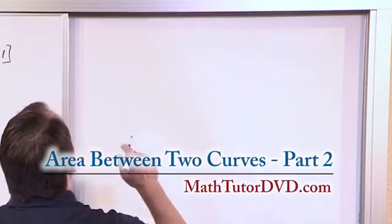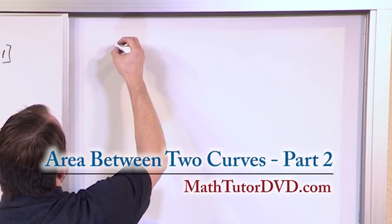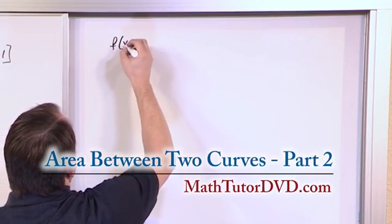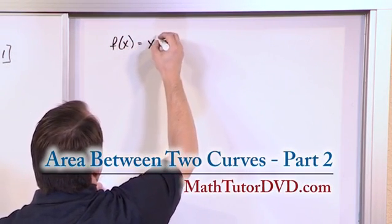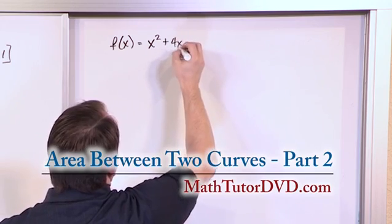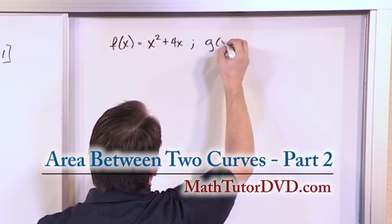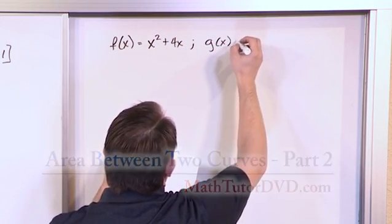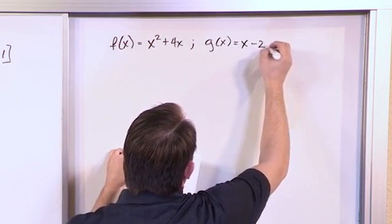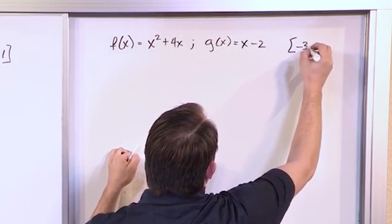Okay, so for our next problem, we want to find the area between f of x and g of x, where f of x is equal to x squared plus 4x, g of x is going to be equal to x minus 2, and we're looking at the interval negative 3 to 0.